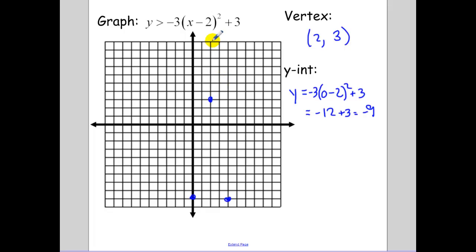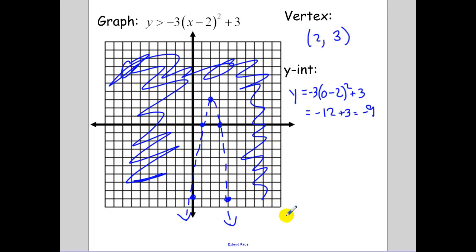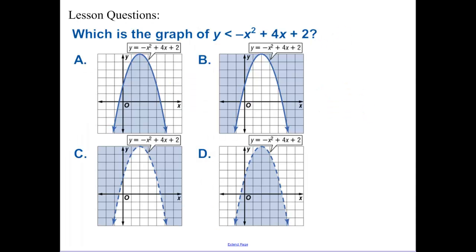And it's also, it's a vertical stretch of negative 3, so I'd go down 1, left and right 3, we're dashed. And since it's greater than, this time we're shading everything above. There's your lesson question, one multiple choice question today.